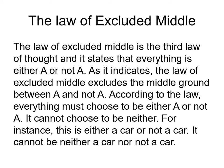The Law of Excluded Middle is the third law of thought, and it states that everything is either A or not A. As it indicates, the Law of Excluded Middle excludes the middle ground between A and not A. According to the law, everything must choose to be either A or not A — it cannot choose to be neither. For instance, this is either a car or not a car; it cannot be neither a car nor not a car.